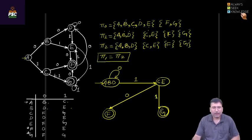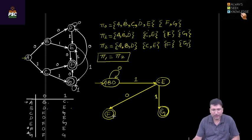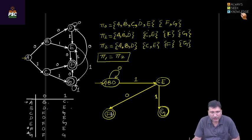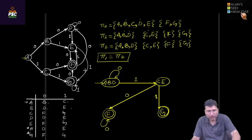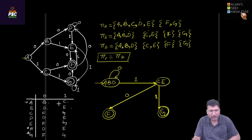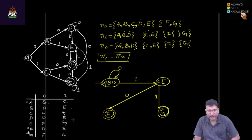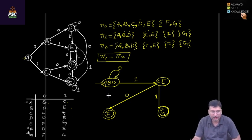For state f: when zero comes, f leads to d, and d belongs to the a-b-d class. So for zero, f transitions to the a-b-d class.